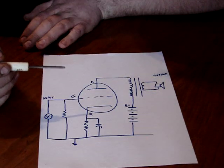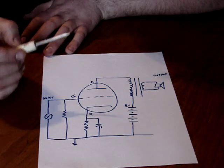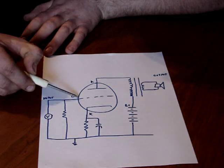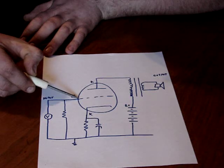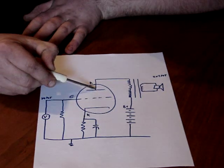Now, class C—there's a term called cutoff. Cutoff is when there's so much negative voltage on the grid that no current will flow between the cathode and the anode.